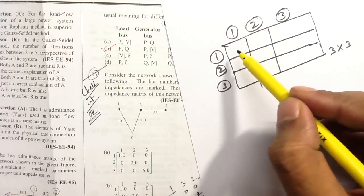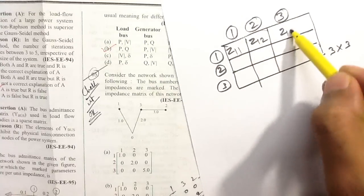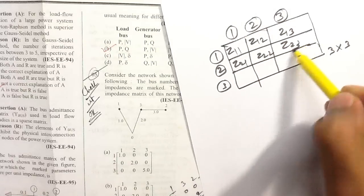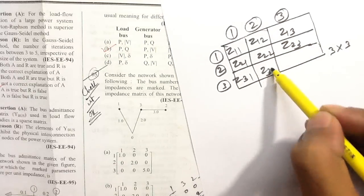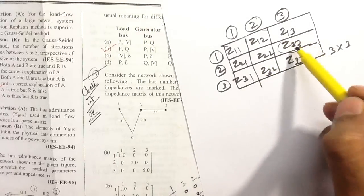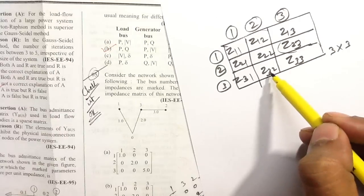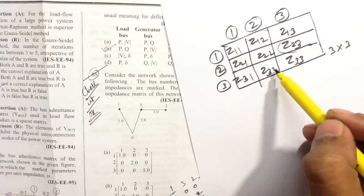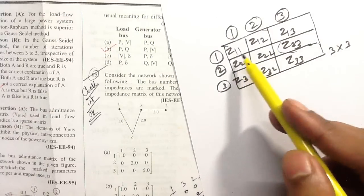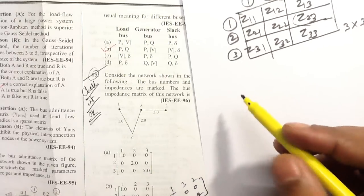The elements we have to find out are Z11, Z12, Z13, Z21, Z22, Z23, Z31, Z32, Z33. Z23 means the 2nd row, 3rd column element. Z32 means the 3rd row, 2nd column element. So we need to find out all these values. I am going to show you a shortcut trick.